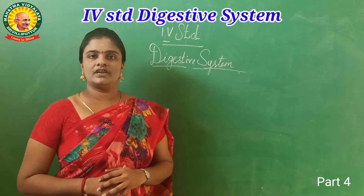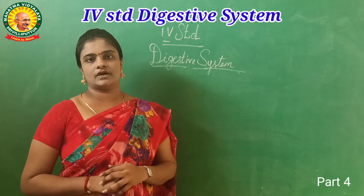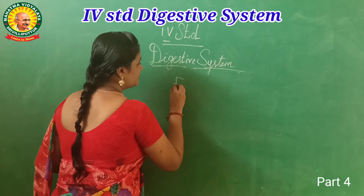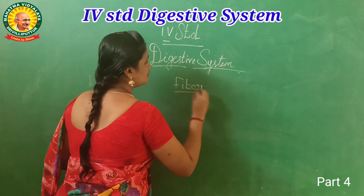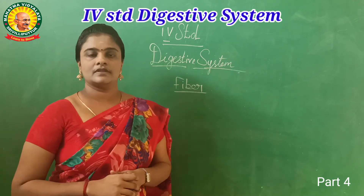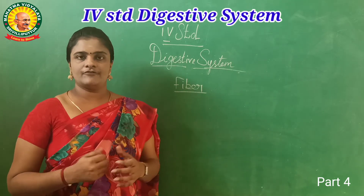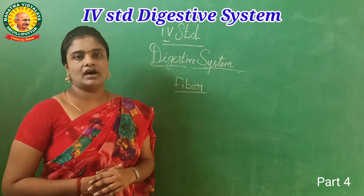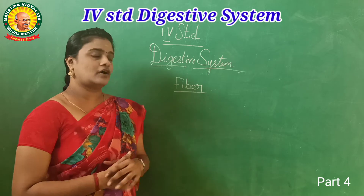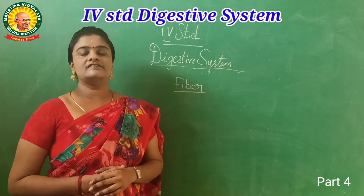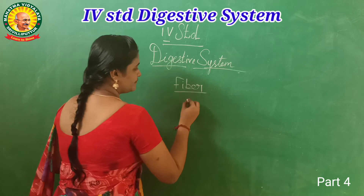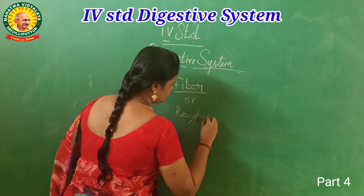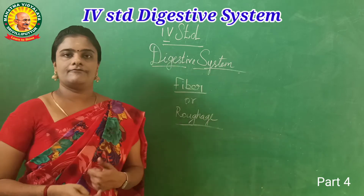What are the nutrients we need for our body? We have seen about fiber. What is fiber? It is one of the sources of strength for our body. Some of the foods that are rich in fiber help our body. This fiber is also called by another name — it is roughage. We call it roughage.